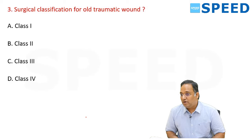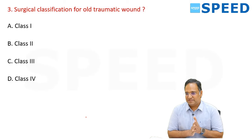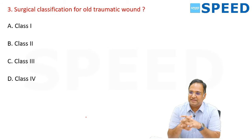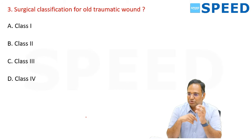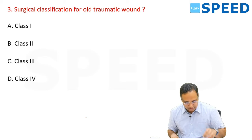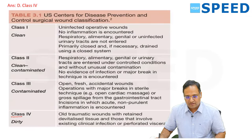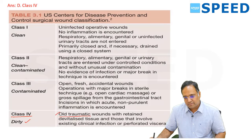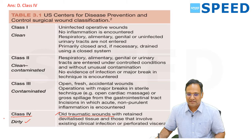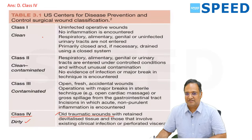Surgical classification of old traumatic wound — this is a must question, asked in every paper. Classification of wounds is a sure-shot question. The right answer is class 4, a dirty wound. Old traumatic wounds with retained devitalized tissue and those involving existing clinical infection or perforated viscera are class 4 dirty wounds. Clean wound is an uninfected operative wound with no inflammation encountered; respiratory, alimentary, genital, urinary tracts are not entered and it is primarily closed.